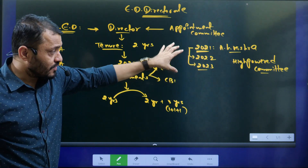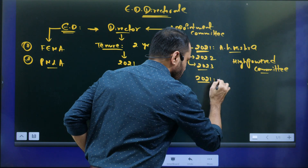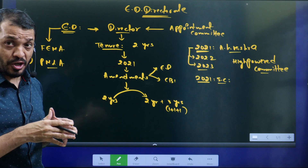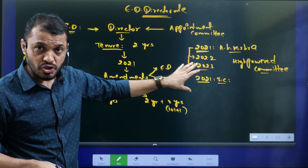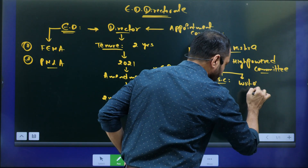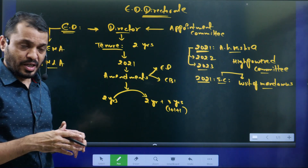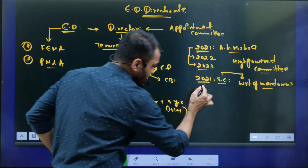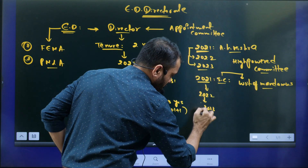The extension given to Ajay Kumar Mishra was not followed according to the rules. In 2021, in the case of Common Cause versus Union of India, the Supreme Court held that Ajay Kumar Mishra should be removed and issued a writ of mandamus against his extension. In spite of that, he got further extensions, and this was challenged in court.